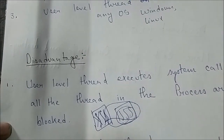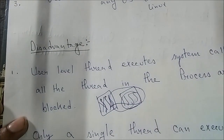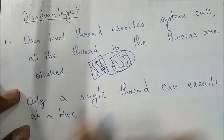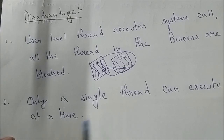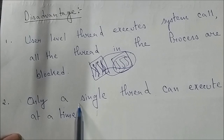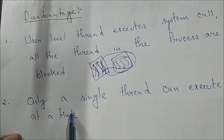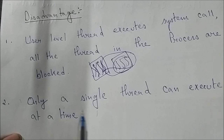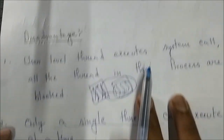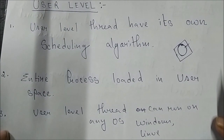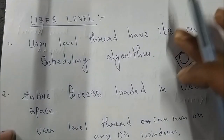Only a single thread can execute at a time — user level thread does not use multi-threading. Only a single thread can execute at a time. So this is about user level thread; it is very important for GATE and is all about theory.